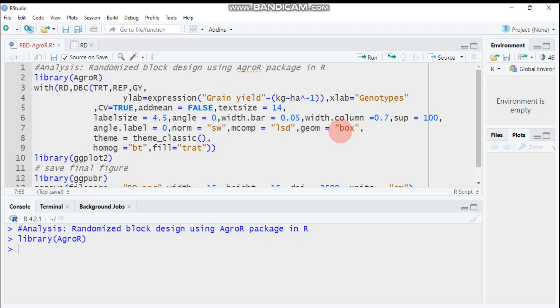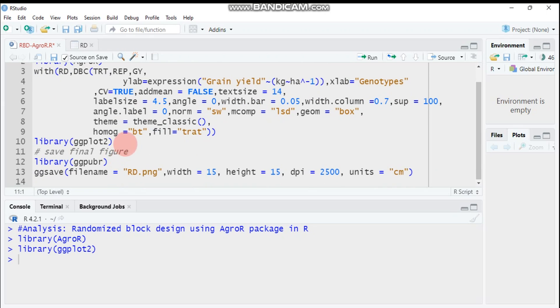Then again here, theme equals theme_classic. This function will work when you enable ggplot, so you have to run ggplot first. There are a number of themes like theme_classic, theme_bw, theme_gray, and classic_2.